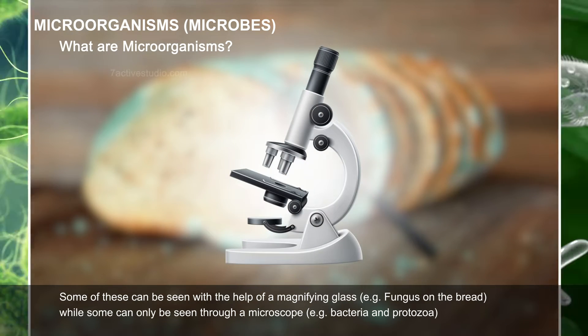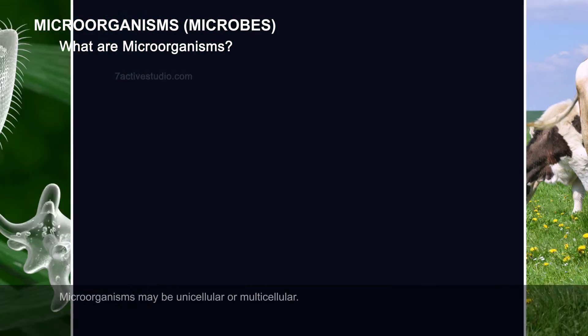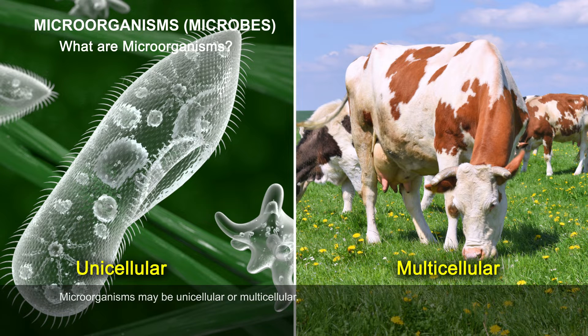For example, bacteria and protozoa. Microorganisms may be unicellular or multicellular. Microorganisms may exist alone or in colonies.